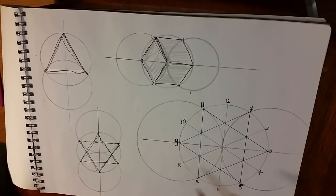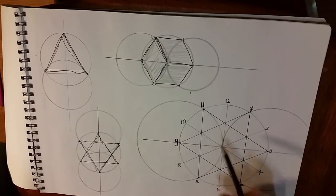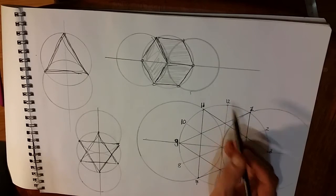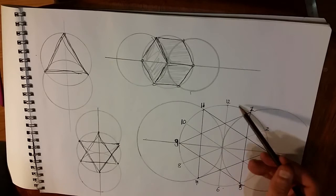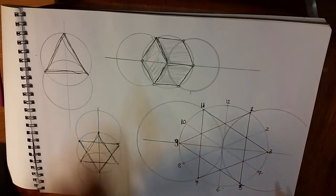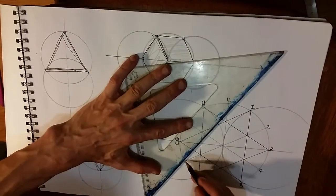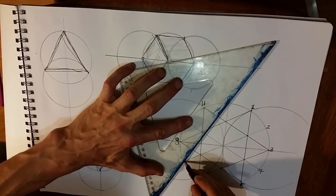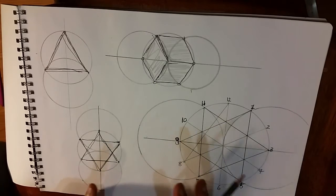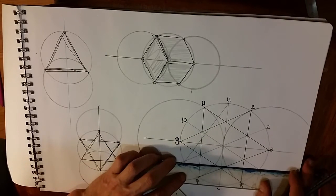And we now have to complete the construction and create a twelve-pointed star. So we begin with 12 and then count over 4 and then another 4 to 8 and we join those together we'll have another equilateral triangle. And so we're beginning to create another star of David but just slanted.